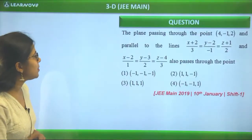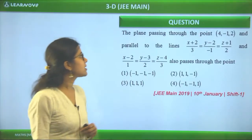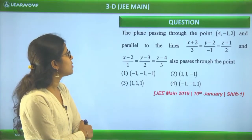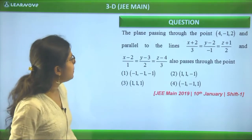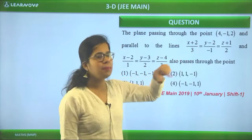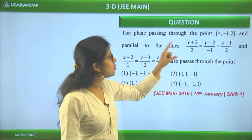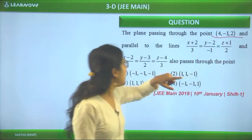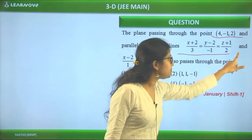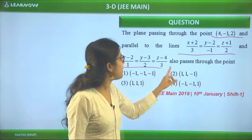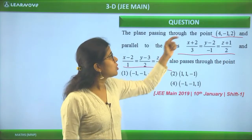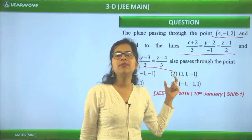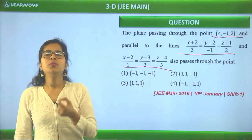Let's start our paper discussion today. The first question is from 10th January Shift 1. We have to find the plane passing through a given point and parallel to two given lines. The plane passes through this point and is parallel to these two lines — this is the format of the question.